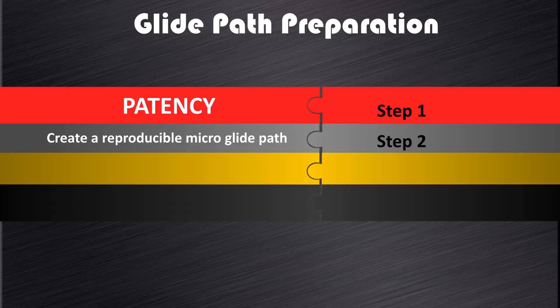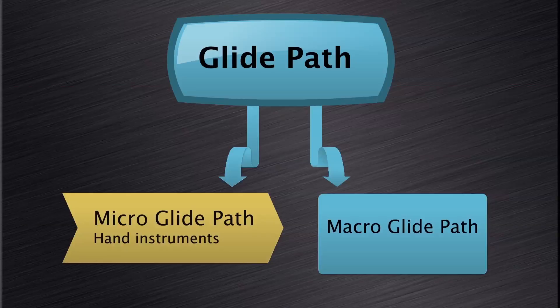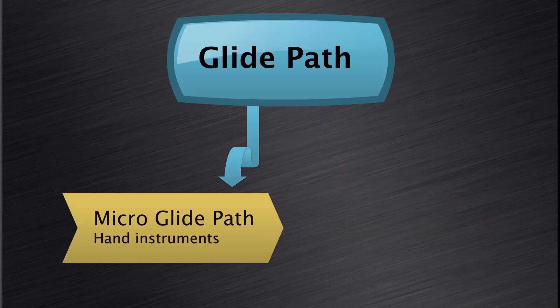The next step towards glide path preparation will be to create a reproducible micro glide path. As you can see from this slide, I like to divide the physical glide path preparation steps into a micro and a macro glide path. Let's first discuss the micro glide path.